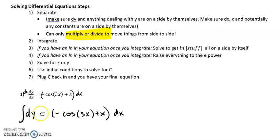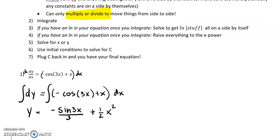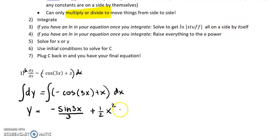Now we can integrate. The integral of dy is just going to be y. Looking at the other side: the integral of negative cosine of 3x — integral of negative cosine is negative sine of 3x — and then we have to do the reverse chain rule, so divide by 3. Plus the integral of x is going to be one-half x squared using the power rule. And then we always have to have a constant when we're integrating, so plus c.